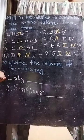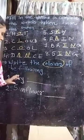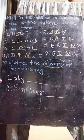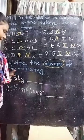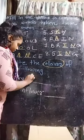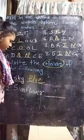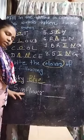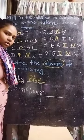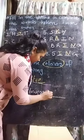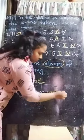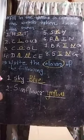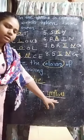Now write the colors of the following. You have to write colors of the following things. First one: sky. Students, what is the color of the sky? Sky का color कैसा होता है? Blue. So write down blue. Then sunflower - what is the color of sunflower? Yellow color. So write down yellow. Sunflower's color is yellow.